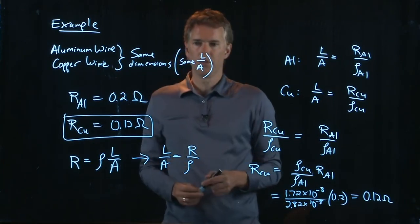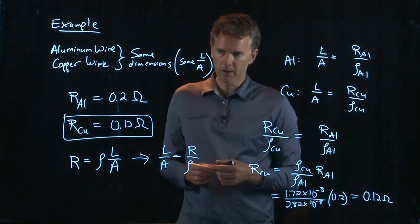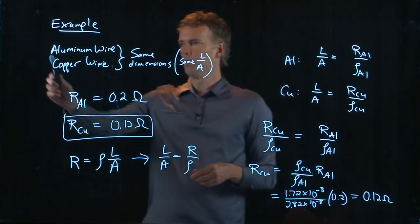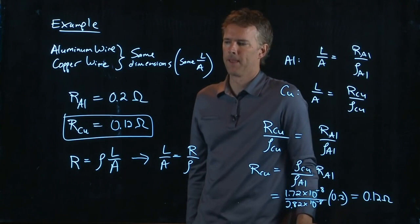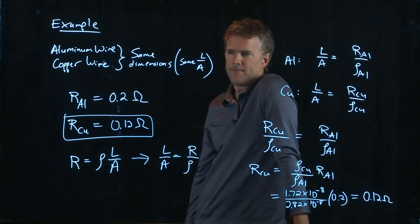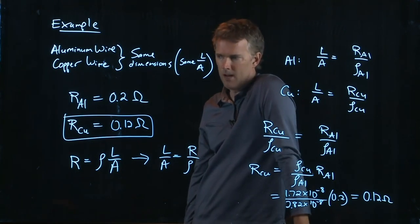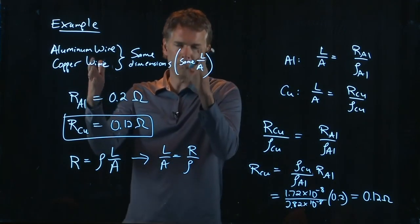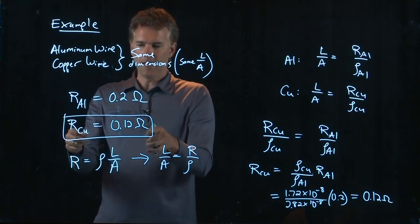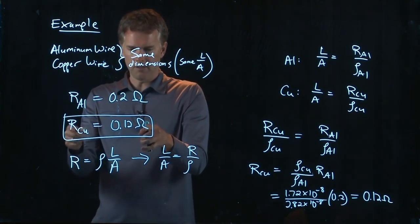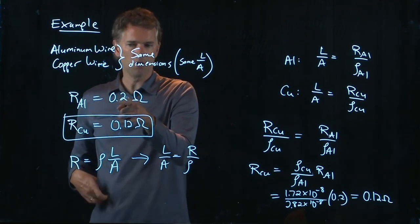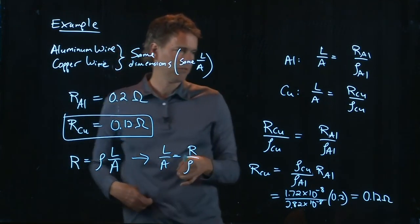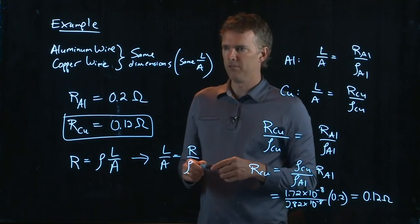So which of these makes a better extension cord? Does aluminum or copper make a better extension cord? Okay, copper, right? Everything else was the same. Same length, same width. And yet the copper has a resistance that is much smaller than the aluminum. It's on the order of half the resistance of aluminum.